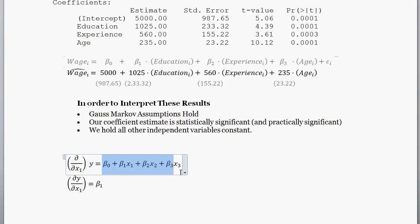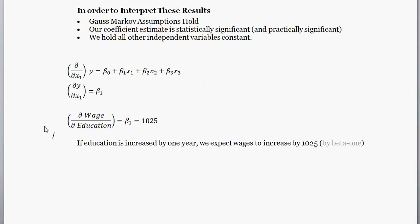So if we were to change this equation right here by one unit of x1, we'd expect y to change by beta 1. So if we were to increase this model by x1, then y is going to go up by beta 1. Now applying that to our model, with wage here as a function of education, experience, and age, we get the following.